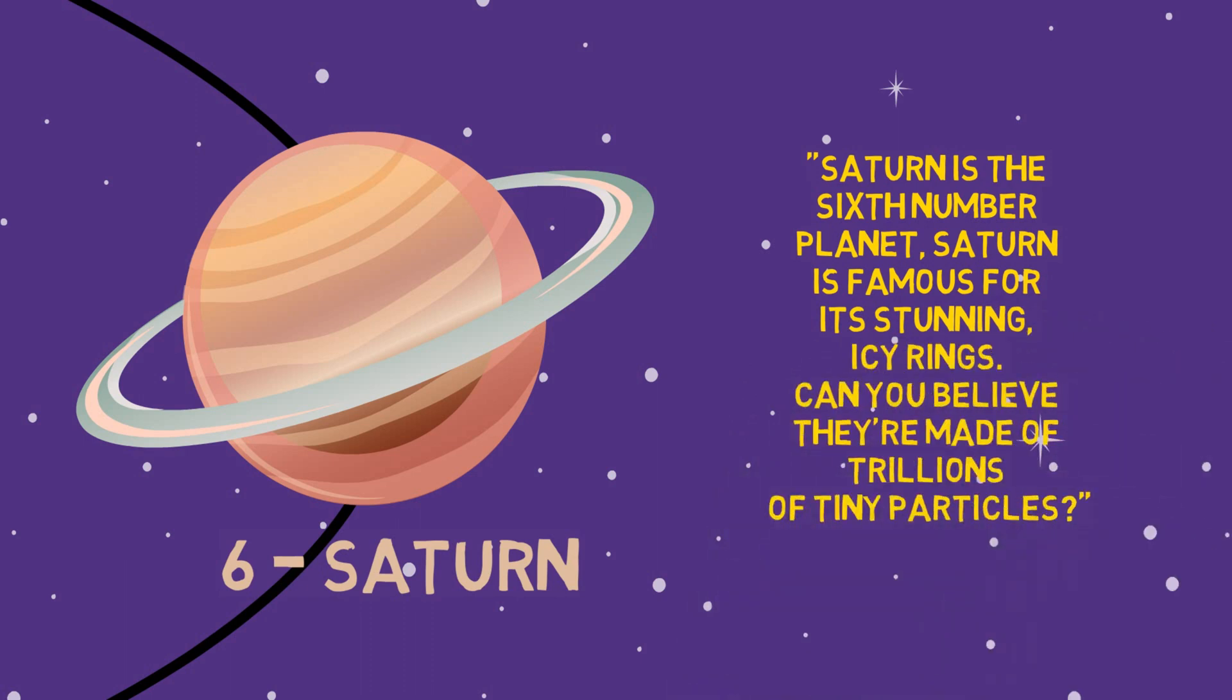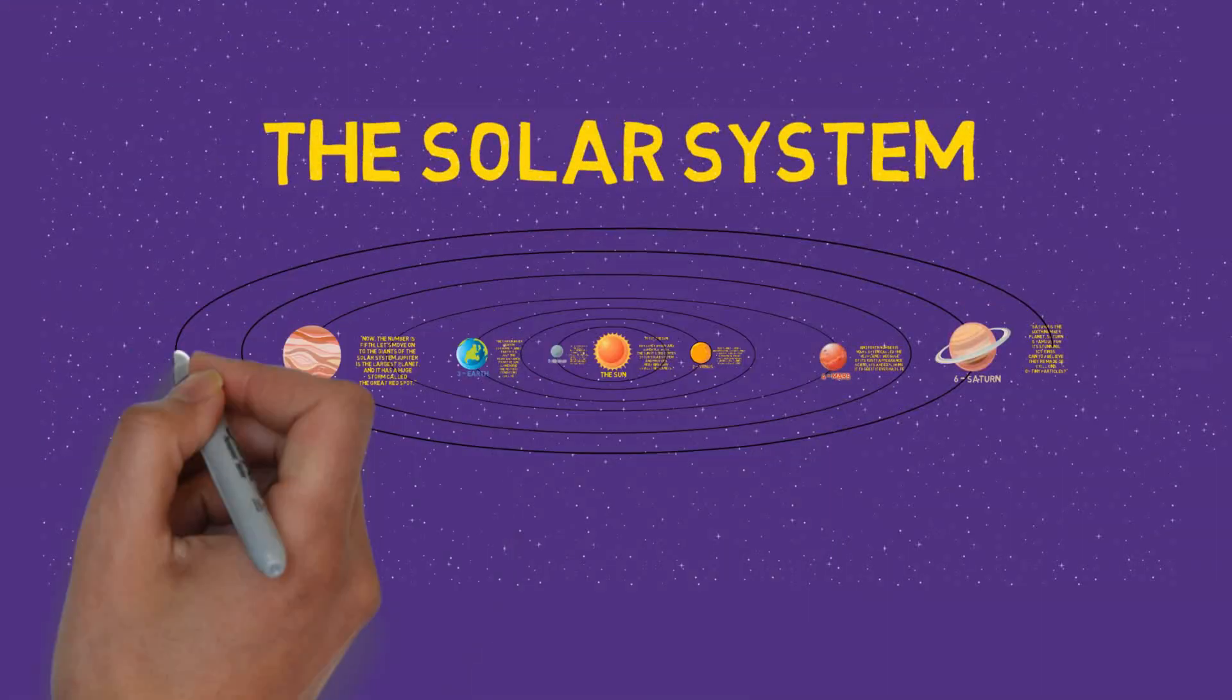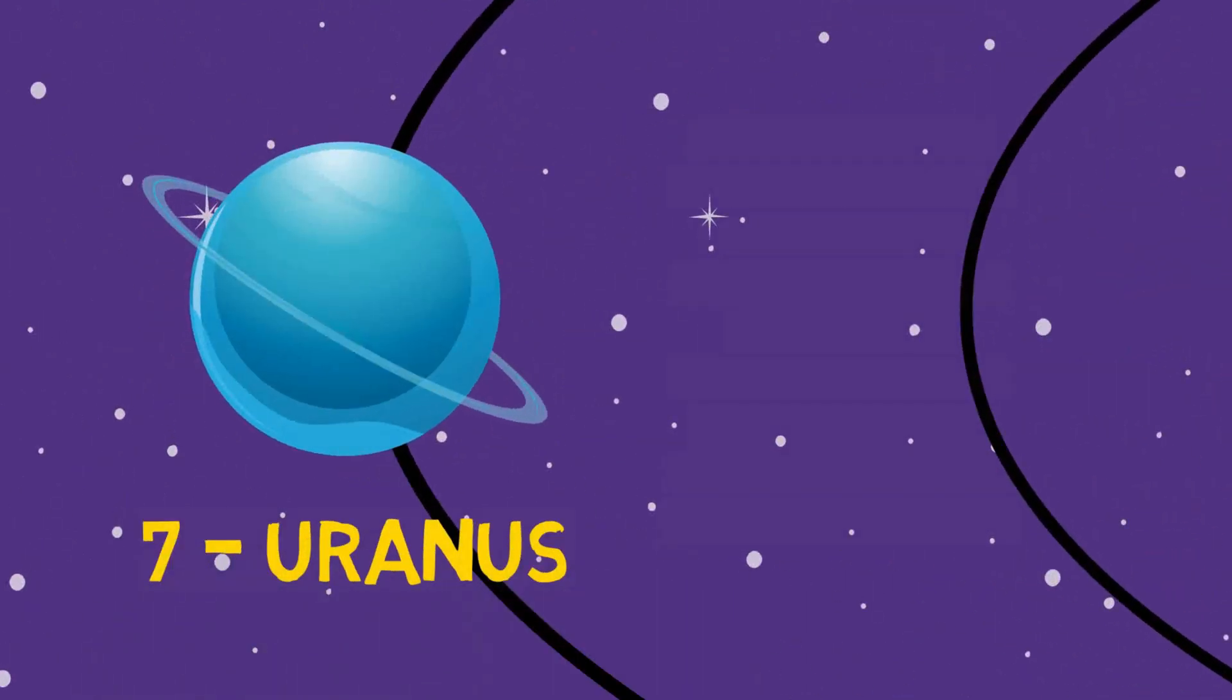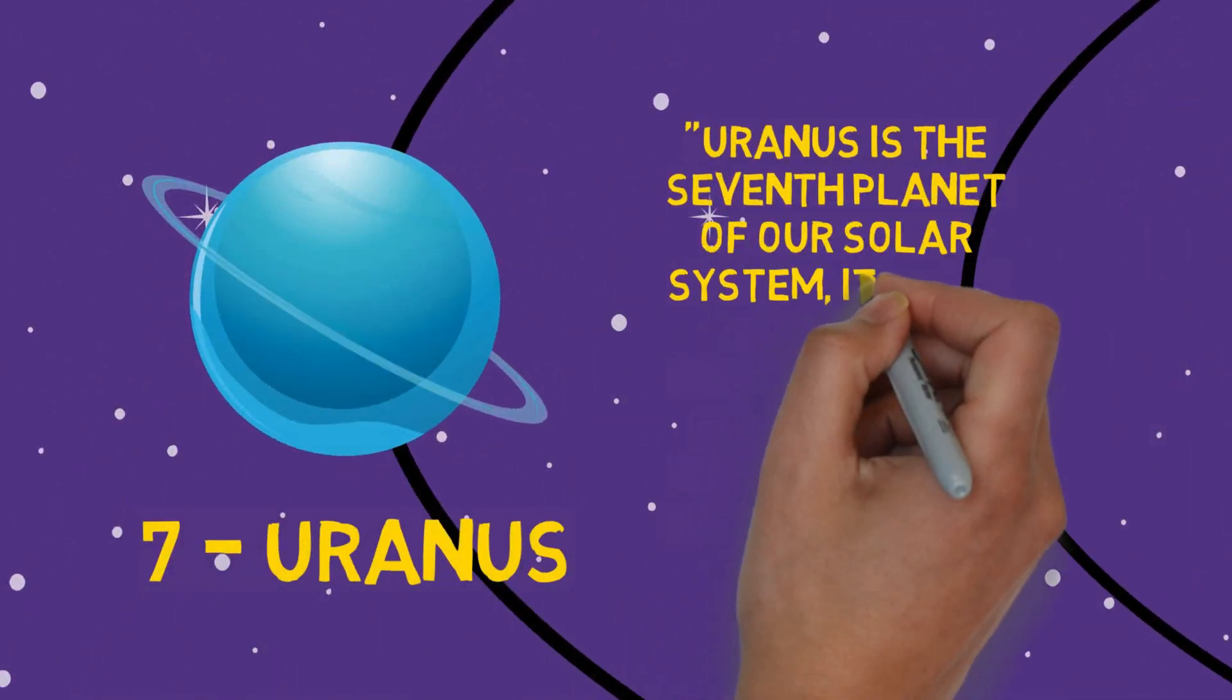Uranus is the seventh planet of our solar system. It is an ice giant. Uranus spins on its side and is well known for its fierce winds.